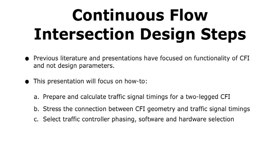So, what are the design steps for continuous flow intersections? I've looked throughout the internet and haven't been able to find anything, which is the reason I'm creating these YouTube presentations. Previous literature and presentations have focused on the functionality of CFIs, not the design parameters. This presentation is going to focus on design parameters — specifically how to prepare and calculate traffic signal timings for a two-legged CFI, the connection between CFI geometry and traffic signal timings, and how to select traffic controller phasing software and hardware.